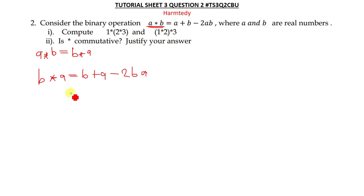This can also be rearranged to just a + b - 2ab. From here you can agree with me to say this expression is exactly the same as that expression, meaning a⋆b is the same as b⋆a, which implies that our operation ⋆ is commutative.